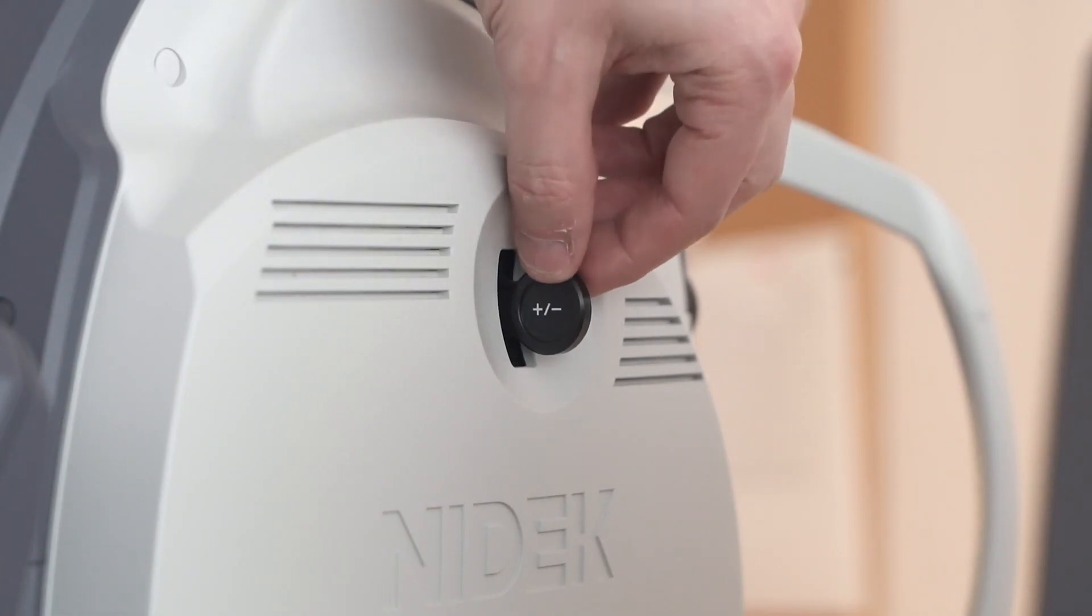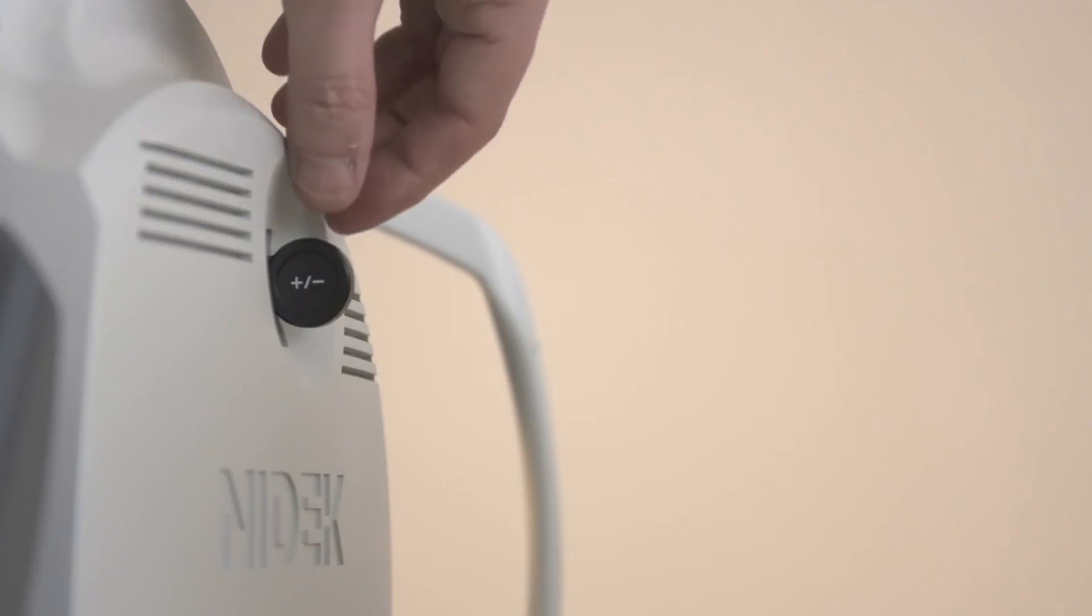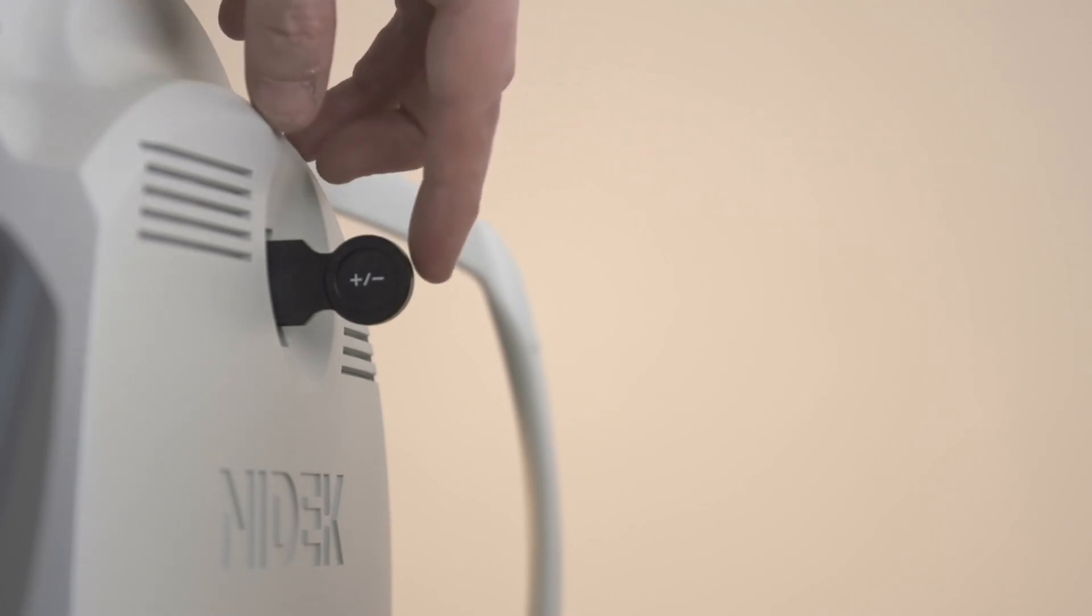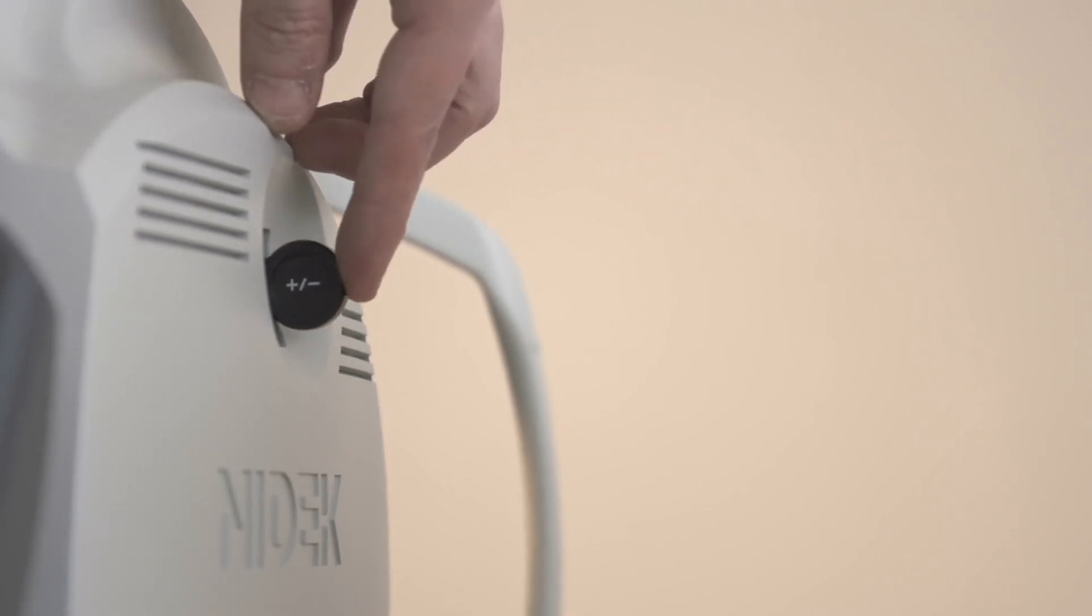On the side of the device here is a paddle which is used to increase the focusing range of the AFC330. Pulling it out once increases the negative focusing range. Pulling it out again increases the positive focusing range. Normally the paddle would be pushed fully in.